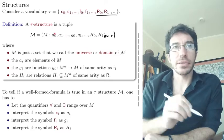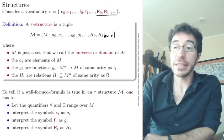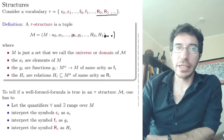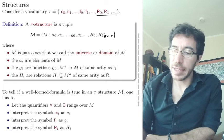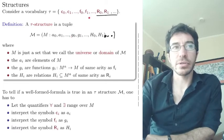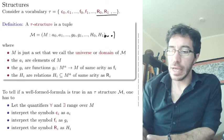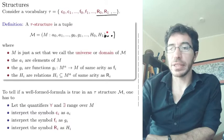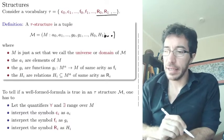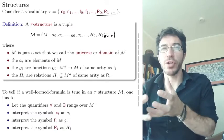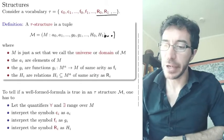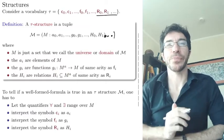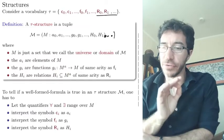These elements that we picked are interpreting the constant symbols. These functions that we pick here are interpreting the function symbols. And these relations are interpreting these ones. Remember, a relation is either true or false when you apply it to a tuple. So here we consider a subset, essentially the subset of all the tuples where this thing is true.